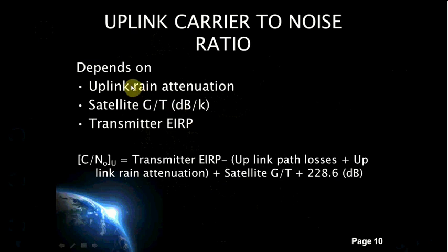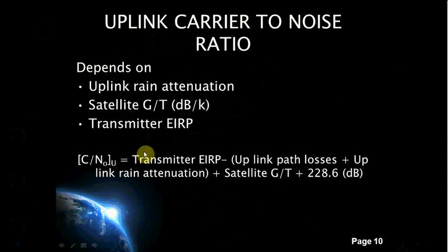Rainfall results in the attenuation of radio waves by scattering and absorption of energy, resulting in uplink rain attenuation. The rain attenuation increases with increasing frequency and is worse at Ku band compared to C band. The satellite G/T ratio is the figure of merit, defined as the ratio of the gain of the satellite to the thermal noise temperature of the satellite, and it depends upon the satellite components. The uplink carrier-to-noise ratio is calculated as: transmitter EIRP − uplink path loss + uplink rain attenuation + satellite G/T + 228.6 dB.